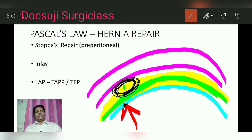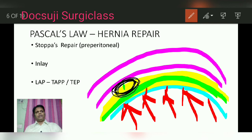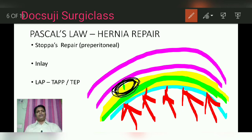The intra-abdominal pressure is exerted like this, and that causes the mesh to act just like that stopper — preventing recurrence of the herniation. This is called the inlay technique.